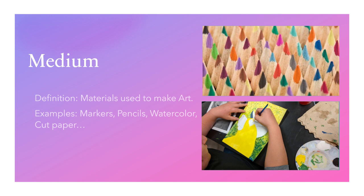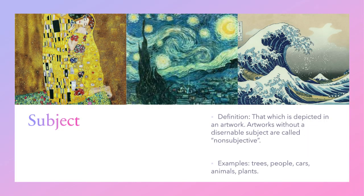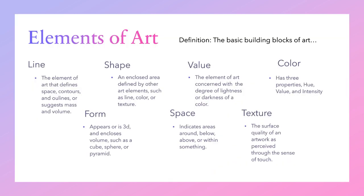Medium refers to the materials used to make art, such as markers, pencils, watercolor, or cut paper. Subject, also called subject matter, is that which is depicted in an artwork. Artworks without a discernible subject are called non-subjective. Think trees, people, cars, animals, plants — whatever is in the picture, that's the subject or subject matter.